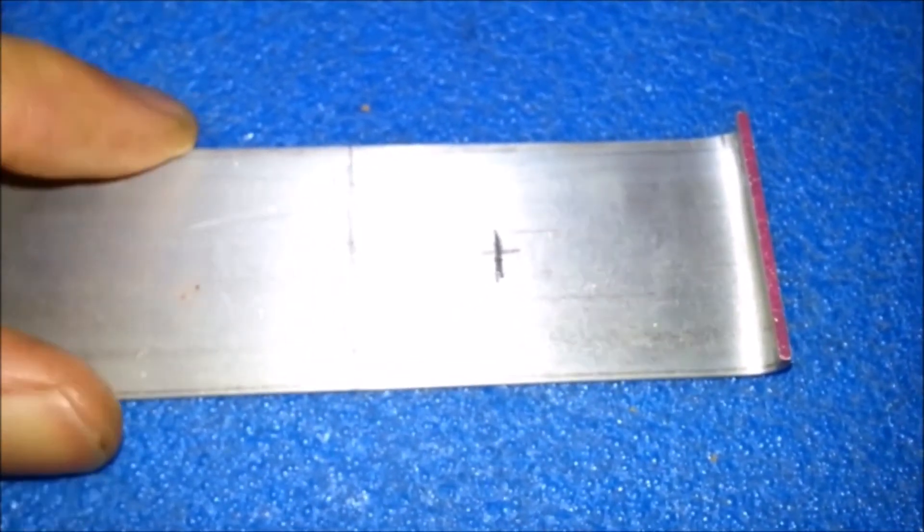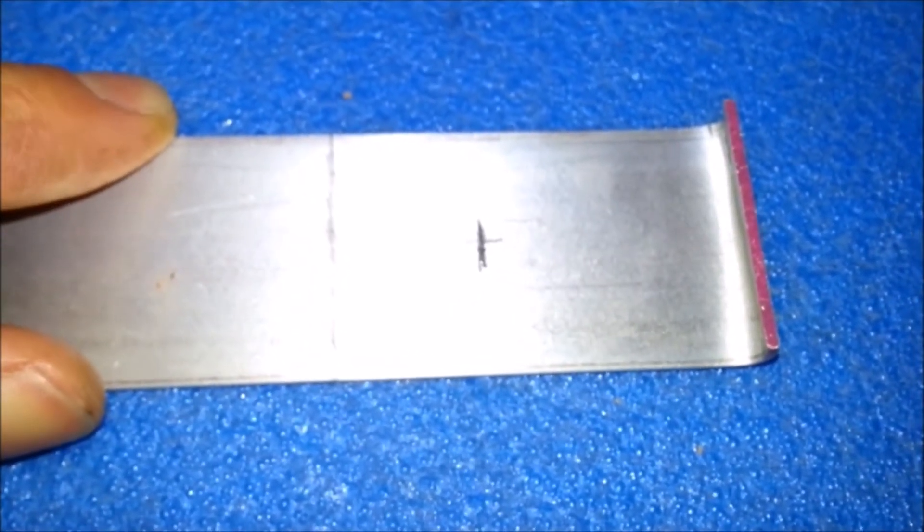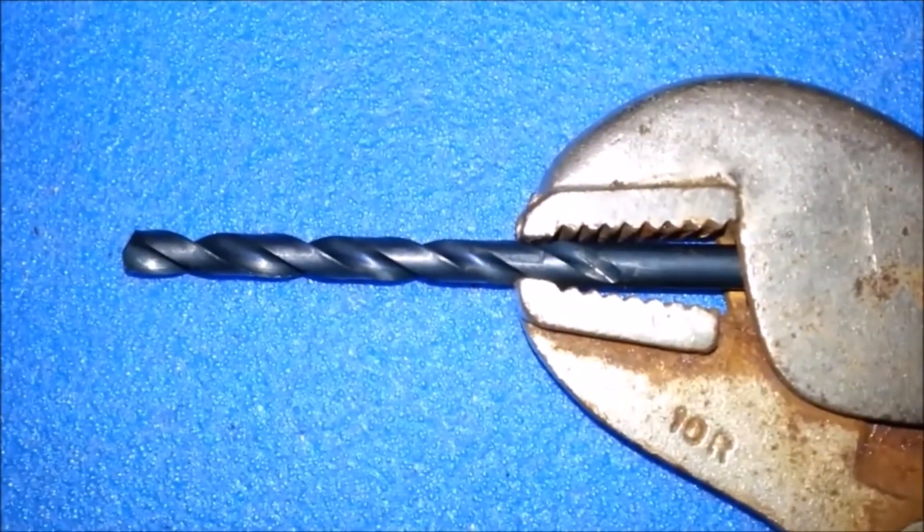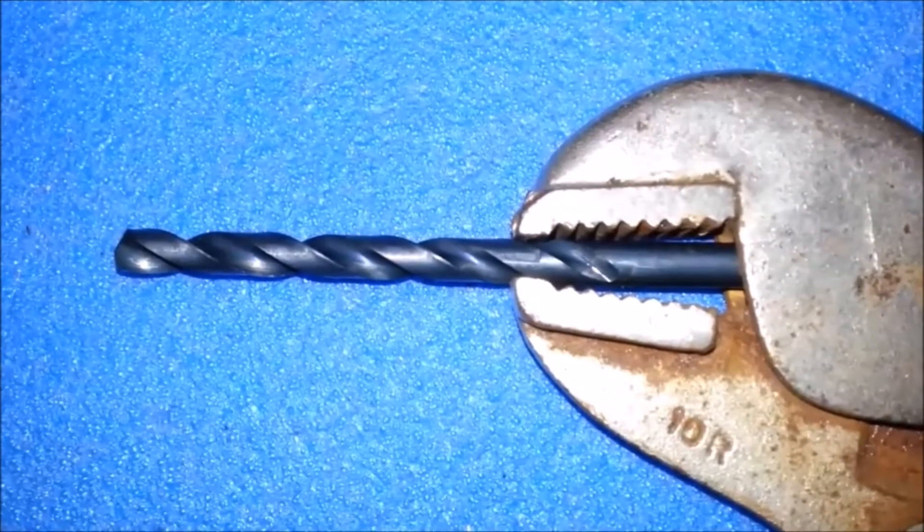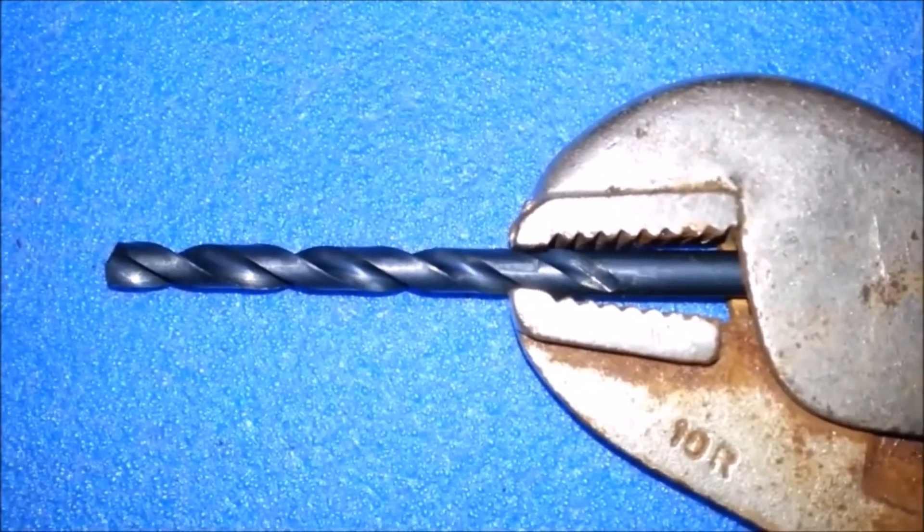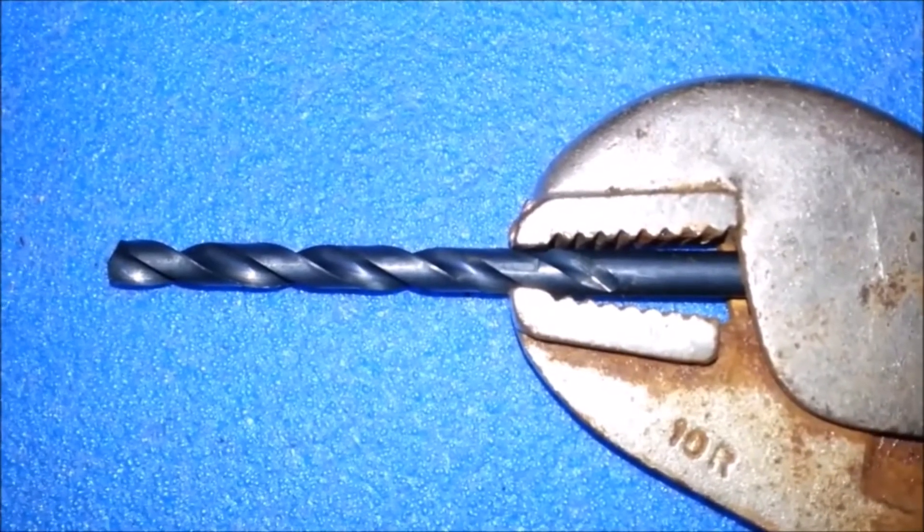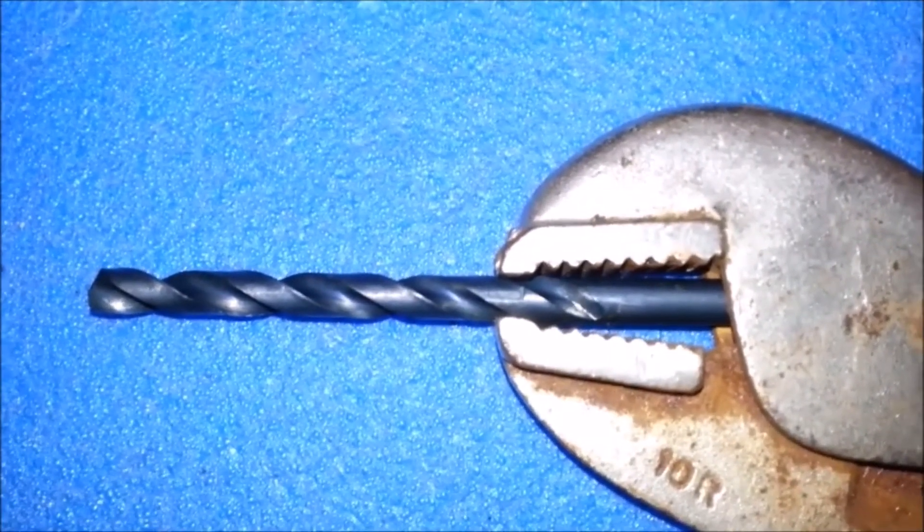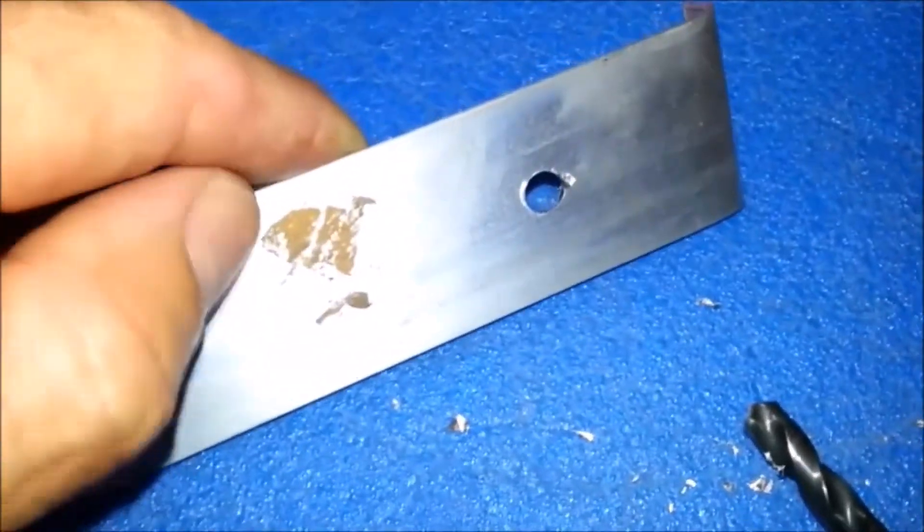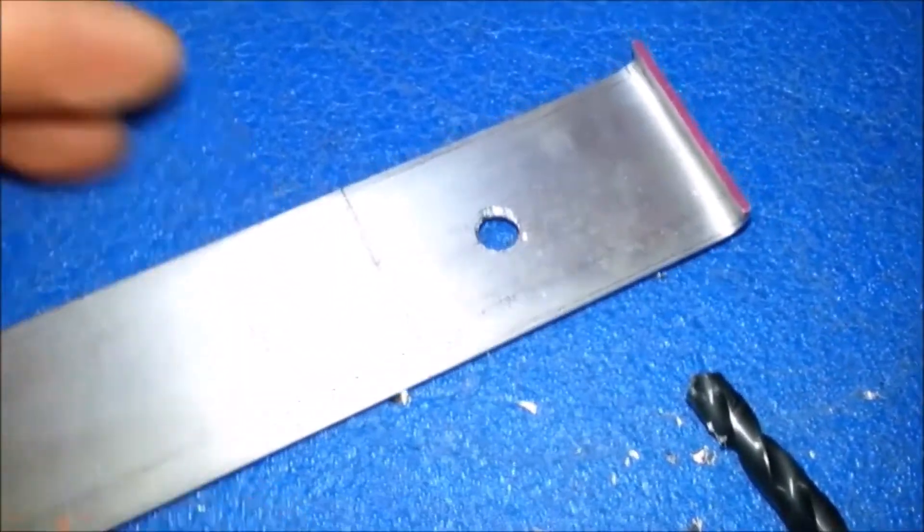I'll drill the hole before I cut this off so it's easier to hold. Since I don't have my power drill with me, here's my redneck drill. I just put a quarter inch drill bit as far up in the vice grips as I could get it. This is a new bit, so drilling through this aluminum shouldn't be too hard. So there's my hole. It's not the cleanest hole in the world, but it worked. It's easier than I thought it would be.